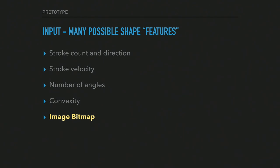There are many possible input features besides pixels — number of strokes, stroke direction, speed, number of angles, convexity. But I chose a simple image bitmap, and it turns out that for this problem it has plenty of detail without needing to extract higher-level features.